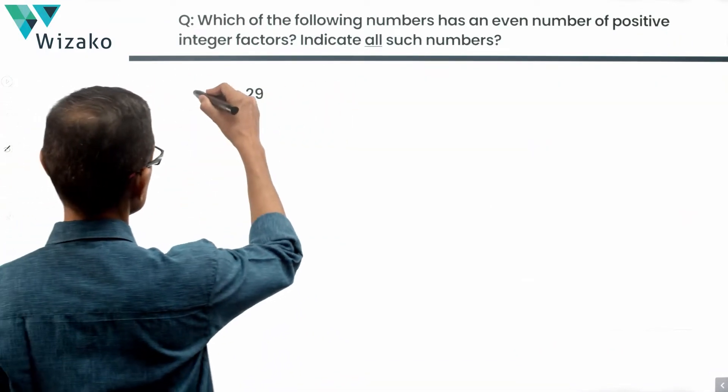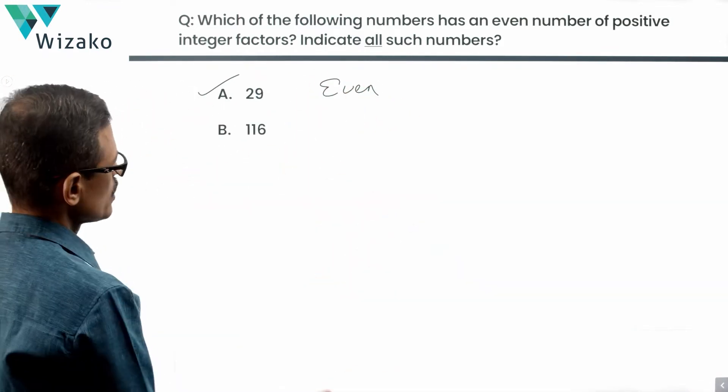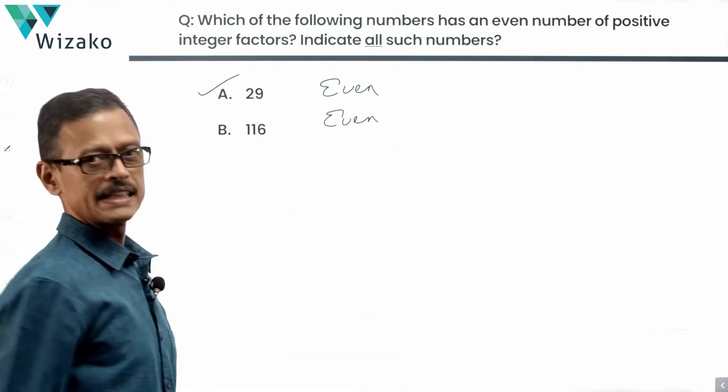29 is not a perfect square. So this is one of our answer options. It'll have even number of factors. 116 is also not a perfect square. So it'll have an even number of positive integer factors.